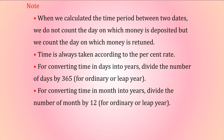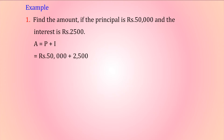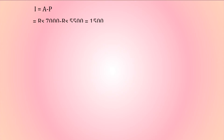Example: Find the amount if the principal is ₹50,000 and the interest is ₹2,500. A = P + I = ₹50,000 + ₹2,500 = ₹52,500. Find the interest if the amount is ₹7,000 and the principal is ₹5,500. I = A − P = ₹7,000 − ₹5,500 = ₹1,500. The interest is ₹1,500.